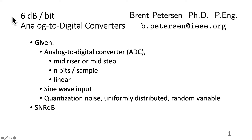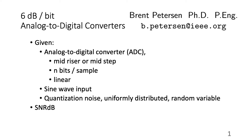6 dB per bit is the signal-to-noise ratio that you get from analog-to-digital converters, and that's going to be derived here. The ADCs will be either mid-rise or mid-step — it doesn't matter. They're n-bit per sample ADCs, linear. A sine wave input will be used, and the quantization noise will be modeled as a uniformly distributed random variable. The signal-to-noise ratio per bit increases based on the number of bits, meaning an 8-bit ADC gives you 8 times 6, or 48 dB signal-to-noise ratio at the output.